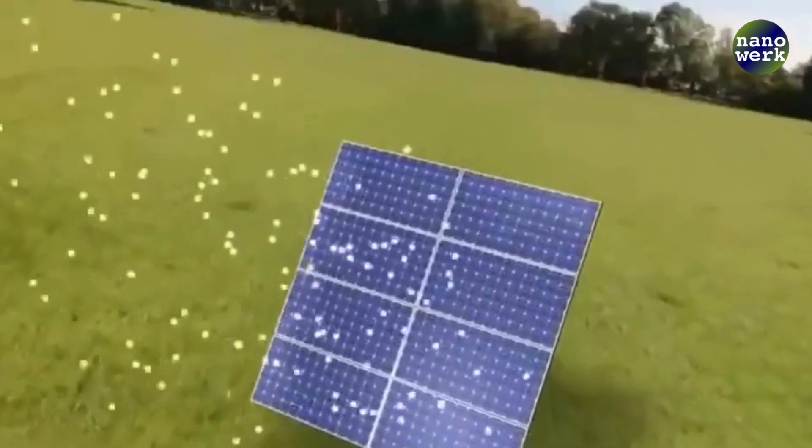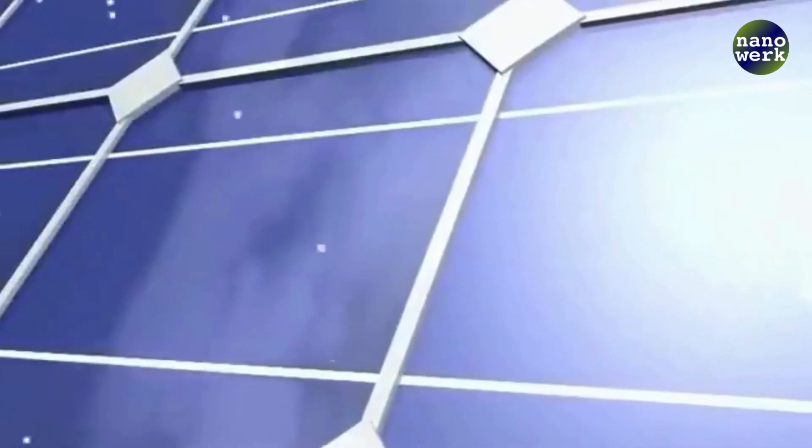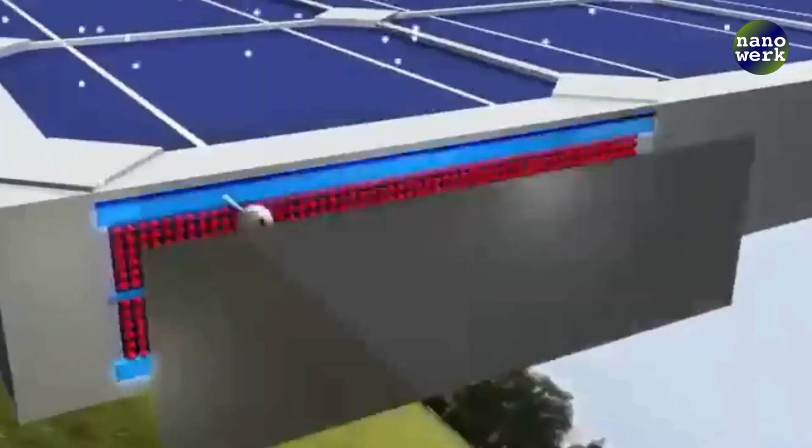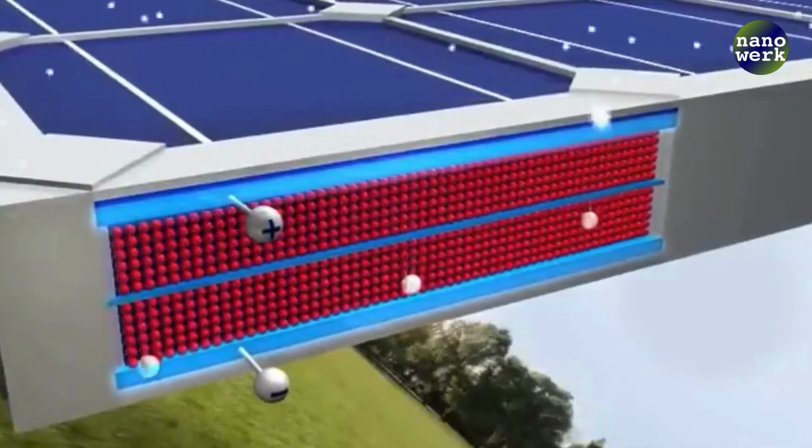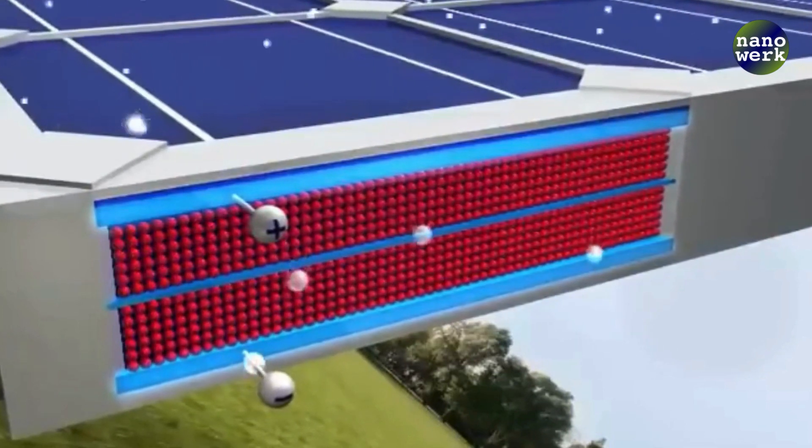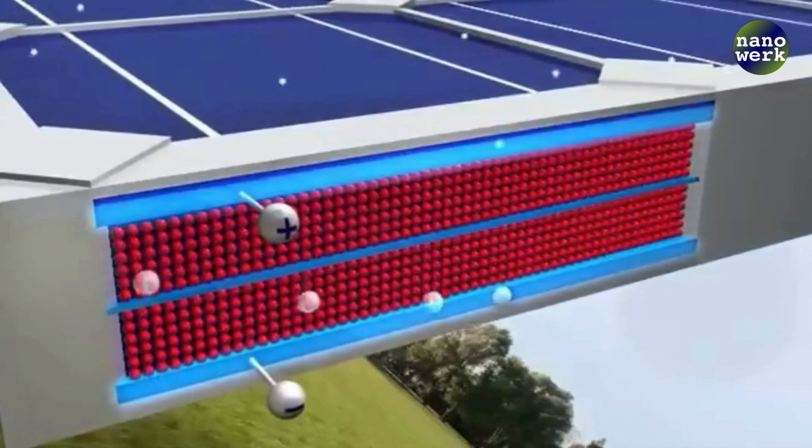One example of this is in solar panels. Photons from sunlight hit the solar cells and their energy is absorbed by the material in the cell, usually silicon. The photons' energy knocks electrons loose, creating an electrical current which is then harnessed as electricity. This process turns light directly into usable energy.